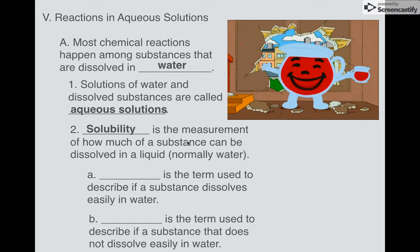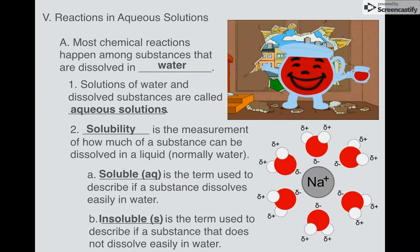Solubility is the measurement of how much of a substance dissolves in a liquid. Normally, we're looking at water. And the two terms that we use are soluble and insoluble. So if something is soluble, that means that it dissolves easily in water. So Kool-Aid is an example of a soluble substance. What about things that don't dissolve in water very easily? That would be an insoluble substance.